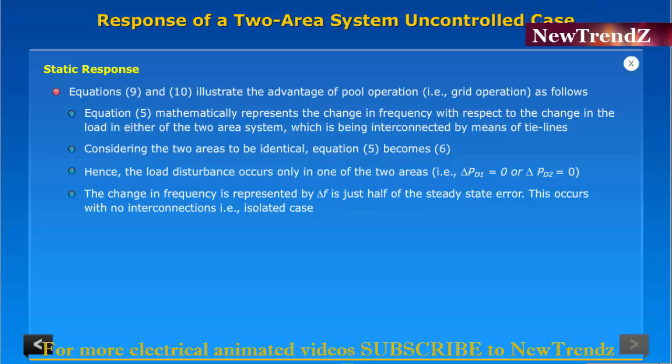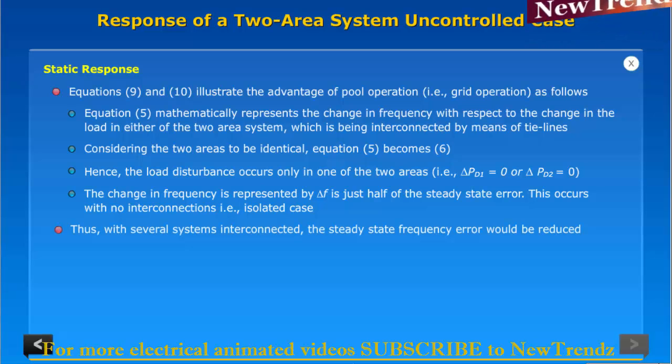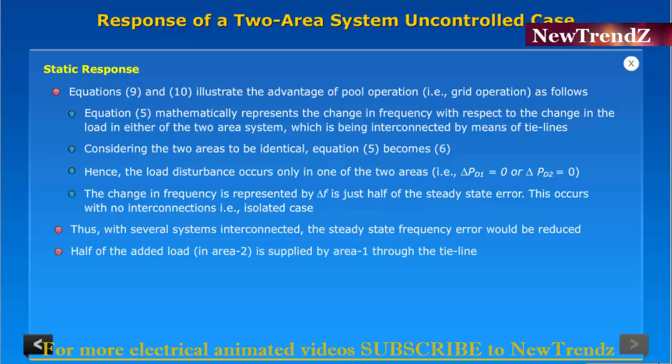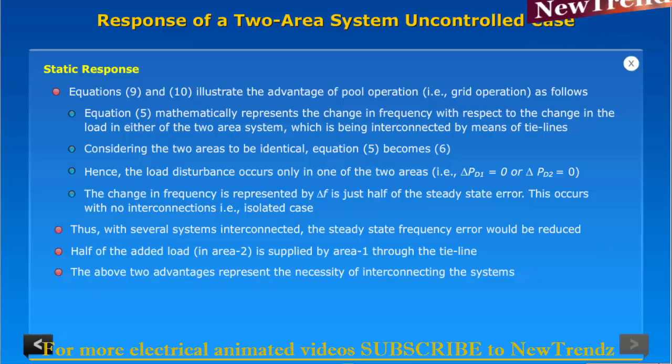This is just half of the steady state error that occurs with no interconnections, that is isolated case. Thus with several systems interconnected, the steady state frequency error would be reduced. Half of the added load in area 2 is supplied by area 1 through the tie-line. The above two advantages represent the necessity of interconnecting the system.